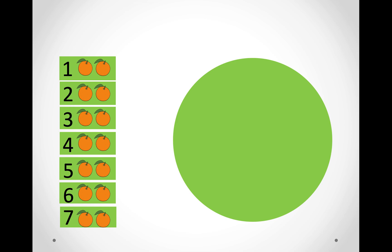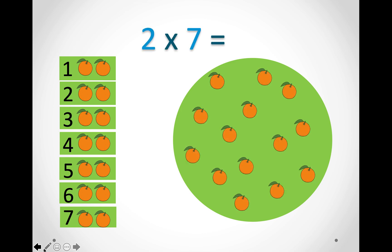In this picture we have seven groups and in each group there are two oranges. So we say two times seven. Let's count in twos: two, four, six, eight, ten, twelve, fourteen. So two times seven equals fourteen.